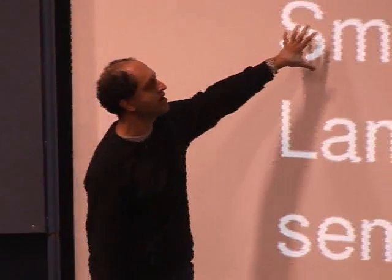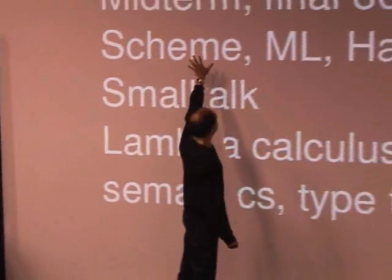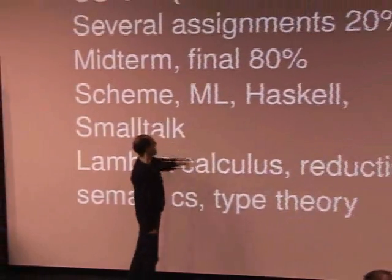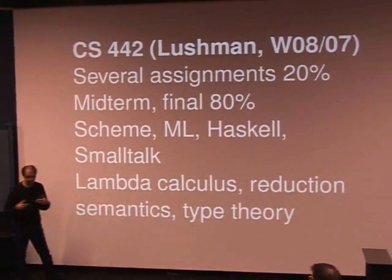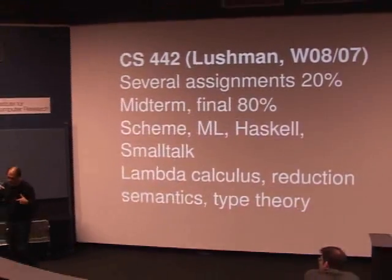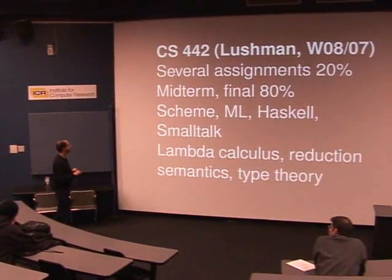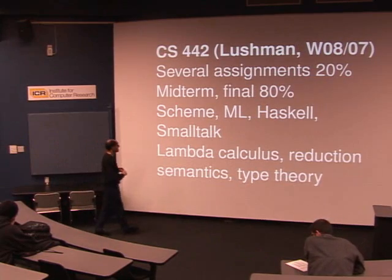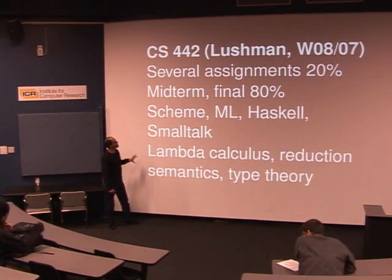Other instructors do it slightly differently. Brad Lushman taught the course for several years as a grad student; he is now back as a lecturer and advisor and may teach it in the future. He has a set of notes that go with it and does things slightly differently. He does talk about Scheme, ML, and Haskell. Instead of Smalltalk — which was my cut-and-paste error — he talks about Prolog, which is a logic programming language, and about Eiffel. He covers many of the same things that I cover as well. I based my version of the course on his and then started making changes.